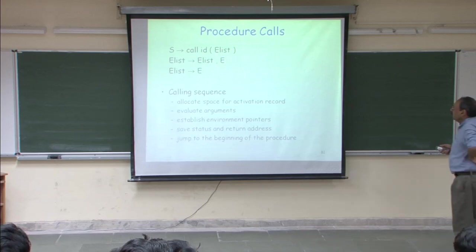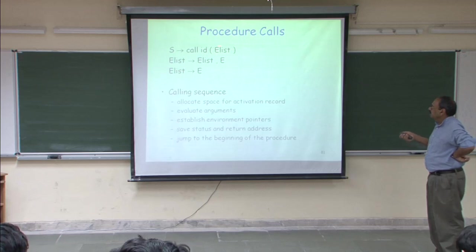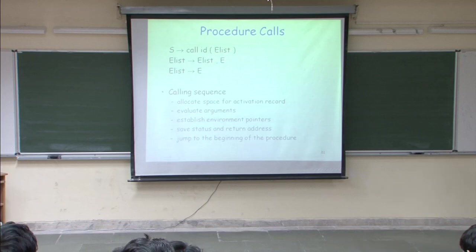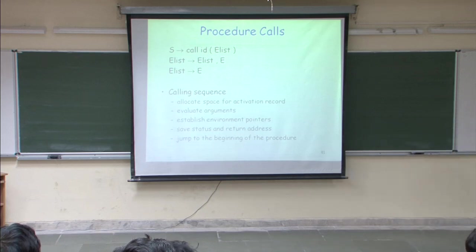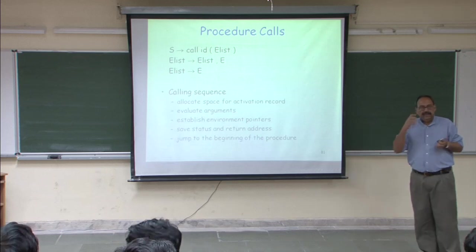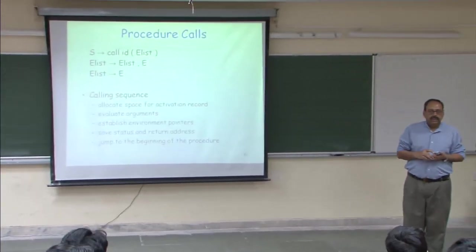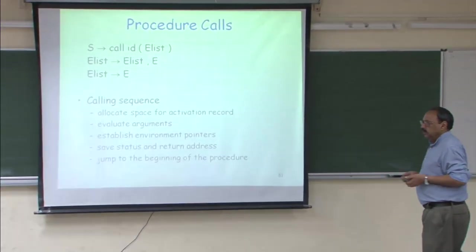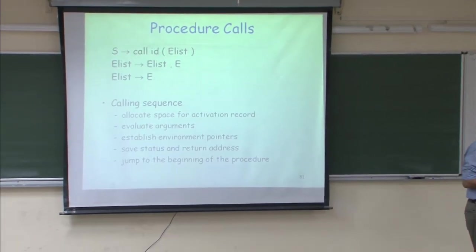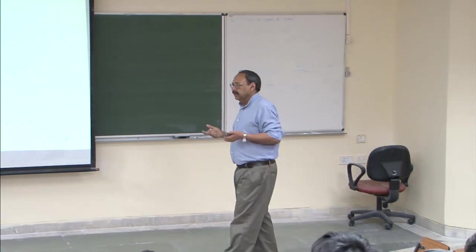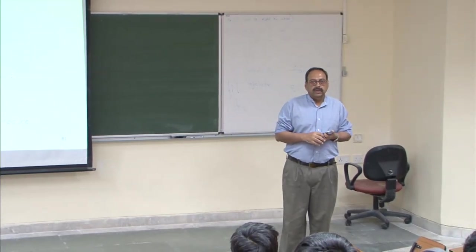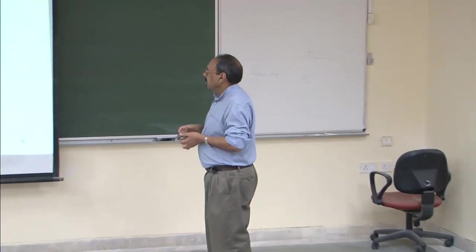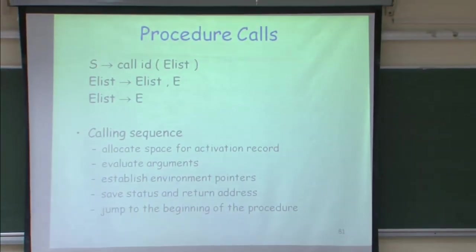An identifier is also a general expression. When we look at a sequence like this in our grammar, several things are needed. First, I need to create something known as an activation record. Basically, what an activation record says is that corresponding to each procedure, certain data has to be created on the stack: values of local variables, values for all the arguments being passed, and space for the return value.